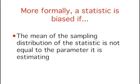More formally, a statistic is biased if the mean of the sampling distribution of the statistic is not equal to the parameter it is estimating.